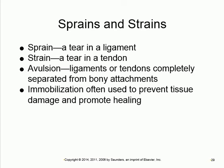To summarize: sprain involves ligaments, strain involves tendons, and avulsion is a complete separation.